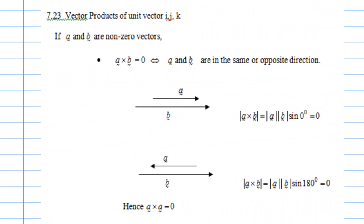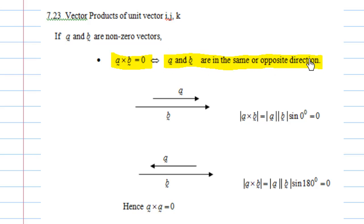We already mentioned: if a and b are non-zero vectors and a cross b is equal to zero, then a and b are in the same direction or opposite direction, so they are parallel. This is because if they are parallel or in the opposite direction, then the angle between them is either 0 degrees or 180 degrees.